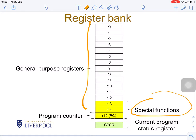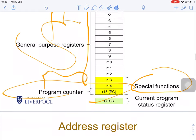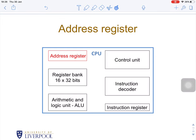R13, R14, and R15 have special functions, which will be covered later. There are 15 general-purpose registers and one program counter (R15). There is also the CPSR — the Current Program Status Register — which is an additional register that will be covered later.